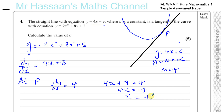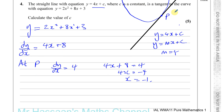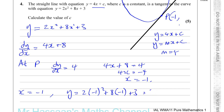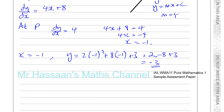Now we find the y-coordinate of point P by substituting x equals minus 1 into the original curve equation: y equals 2 times (minus 1) squared plus 8 times (minus 1) plus 3, which gives 2 minus 8 plus 3 equals minus 3. So the coordinates of P are (minus 1, minus 3).